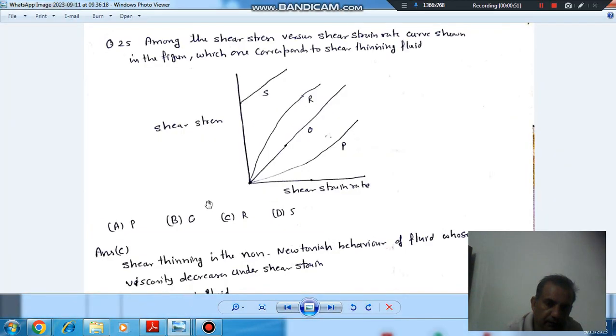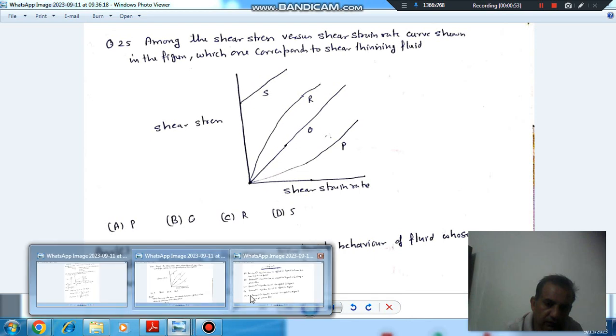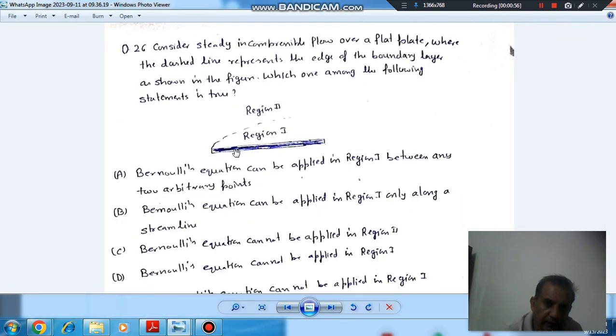So, this is your region 1, and in region 1, there is viscous flow.